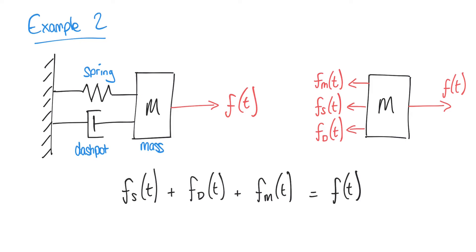Just like our previous RLC circuit example, we have a left hand side in terms of different forces, but we want to be consistent and have everything entirely in terms of the same output parameter we wish to analyze. We could substitute so that everything is in terms of FD(t) or FM(t), as we did in the first order example, but for our example let's substitute so that everything on the left hand side is in terms of FS(t) — the force on the spring — supposing we want to see how the spring force changes as we apply the input force. So FS(t) is our output, meaning we need to replace the FD and FM terms.